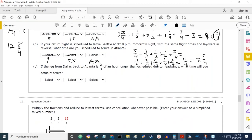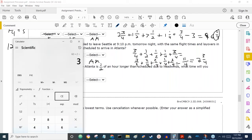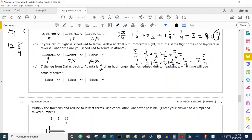And then they got to make it a little bit more complicated. If the leg from Dallas back to Atlanta is ⅔ of an hour longer than scheduled due to headwinds, what time will you actually arrive? So ⅔ of an hour, if you take 60 minutes and multiply by 2, divide by 3, that's 40 minutes. Two-thirds of an hour is 40 minutes, so all we have to do is take this time and add 40 minutes because of the headwind delay. Take whatever answer you get in part B and add 40 minutes to it, so if we do that, that'd be 10:35.